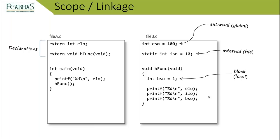In C we have three different scopes. The default at file level is external scope — what we commonly call global objects. These are visible anywhere in the program if an external declaration is used. We also have file-based scope with internal linkage: applying static to data or functions limits access to within that file only. A static object can be accessed within the file but not outside it.